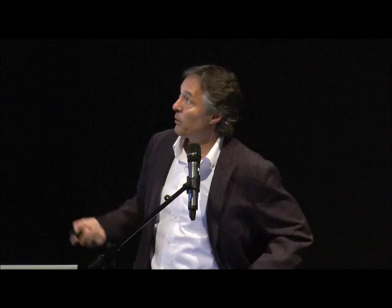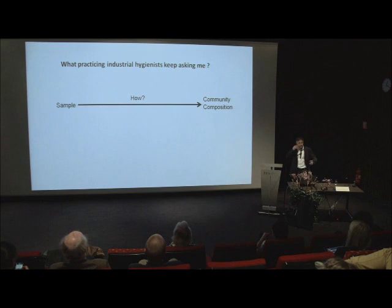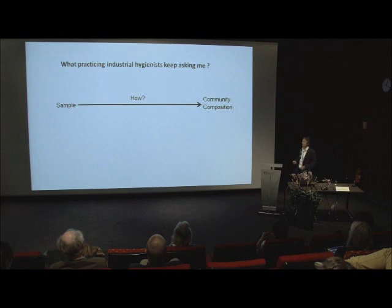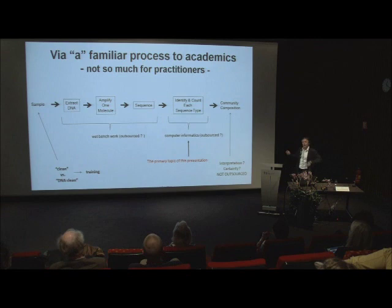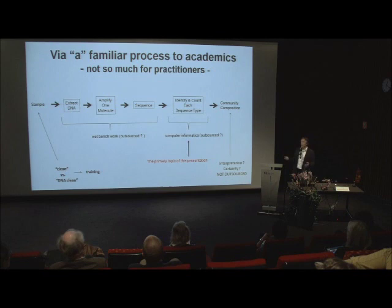Moving on to the discussion about DNA — and Tina brought this up — we have to know how to sample, and how you sample affects your result. Not only that, how we process affects our interpretation of results. What I'm getting from the industrial hygiene sphere is: how do we get from sample to confident interpretation of community composition? When we start with the DNA world, industrial hygienists have an idea of clean sampling — an aerosol cassette or a button sampler — but DNA clean is different than clean. A practitioner told me, 'that means training. You have to teach me how to sample for recovering DNA, which is different than how I sample already.' And it's serious training.